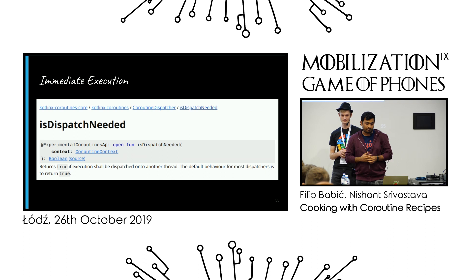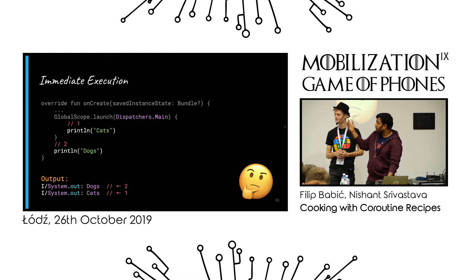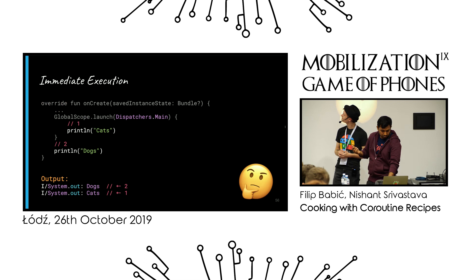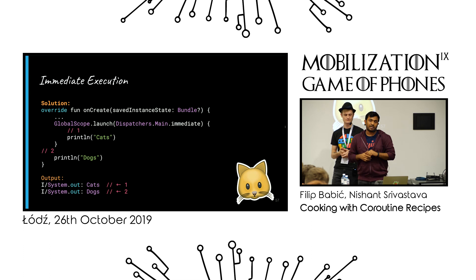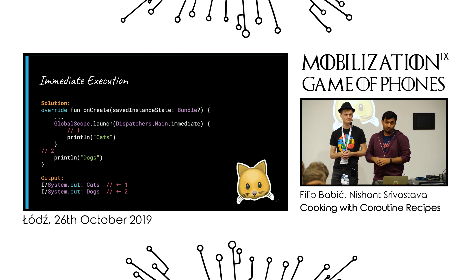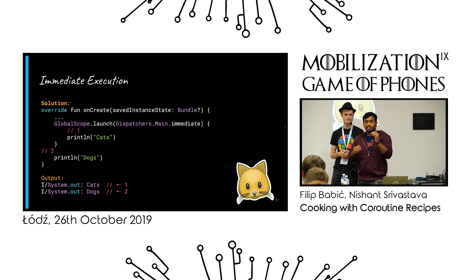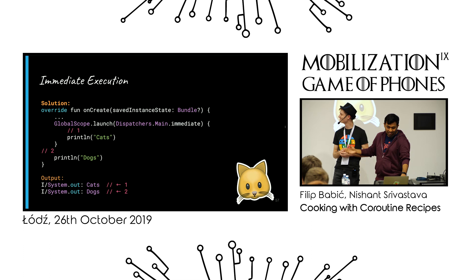Instead of passing Dispatchers.Main, you explicitly say Dispatchers.Main.Immediate, which tells the coroutine not to check isDispatchNeeded — just go ahead and execute immediately. This is specific to the main dispatcher. Now the result is what you'd expect: cats are shown first and dogs next. This brings us to the next topic — handling cancellations when running multiple coroutines.